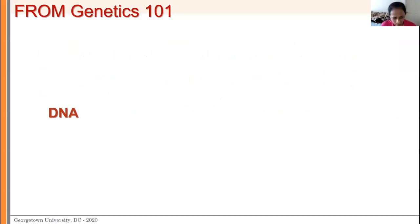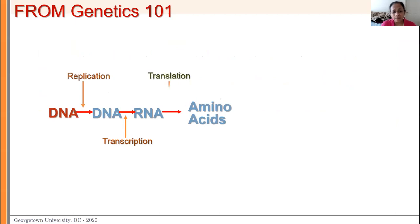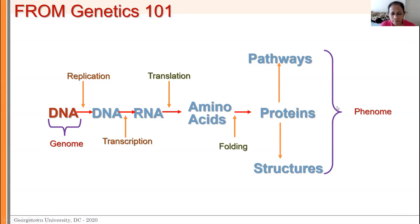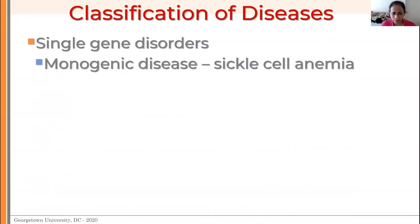The Human Genome Project has transformed the way we think about diseases. Genetics 101: we know about single gene disorders — monogenic diseases. Sickle cell anemia — all of you have heard of it. How do you classify diseases? We have single gene disorders, and we'll talk about how just one single mutation in a sequence can actually cause a disease.